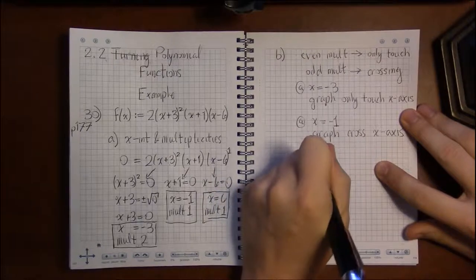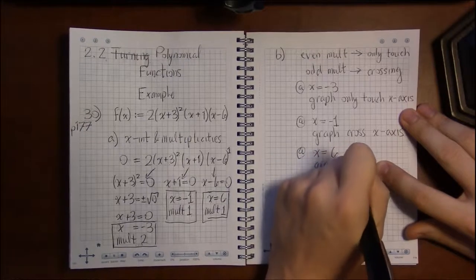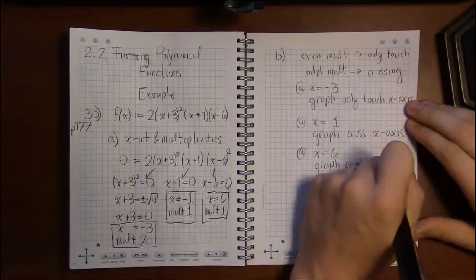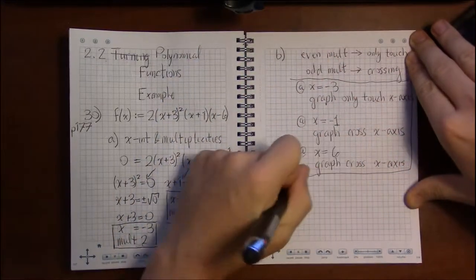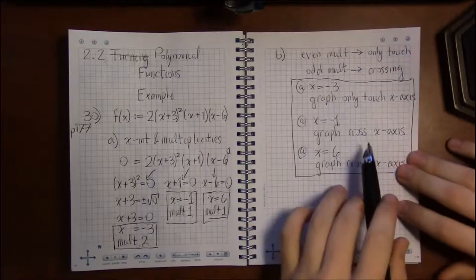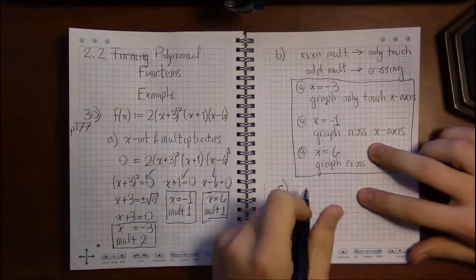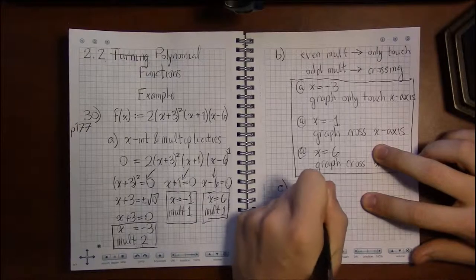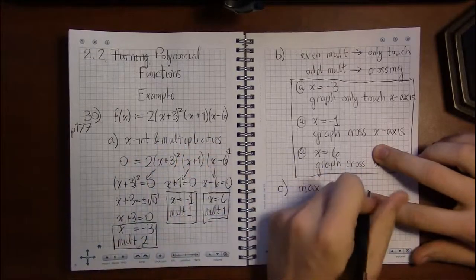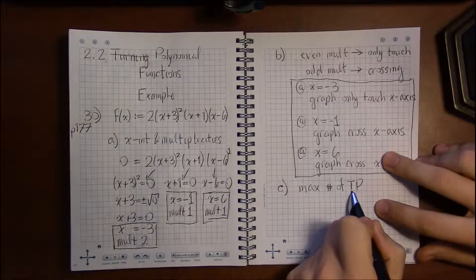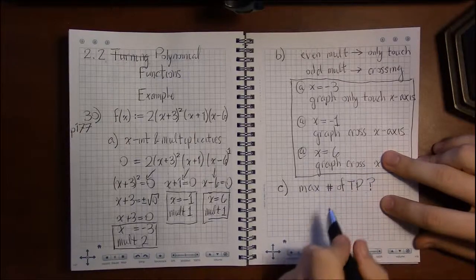And then finally at x equals 6, again the graph will cross the x-axis. So that's our answer for part B. For part C, we're asked to find what would the maximum number of turning points be for this polynomial. And I'll just abbreviate turning points as TP.